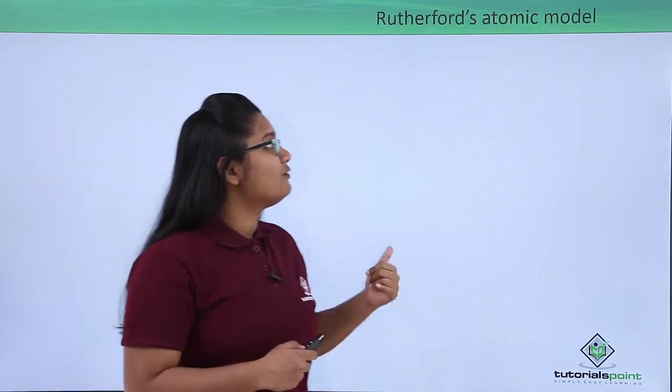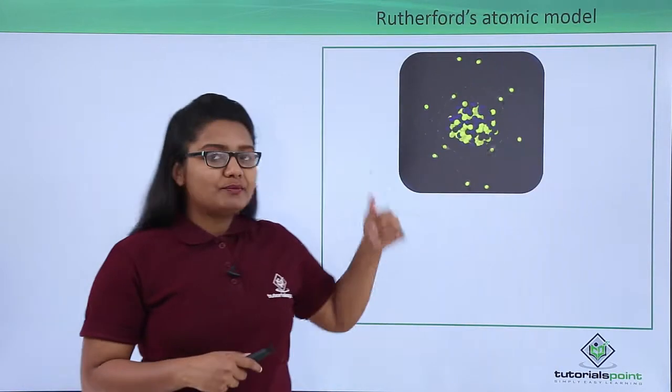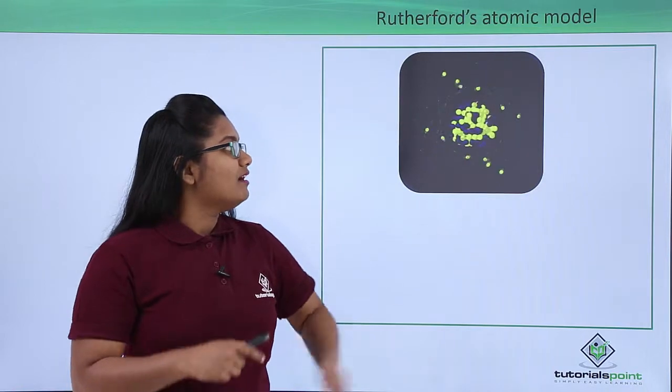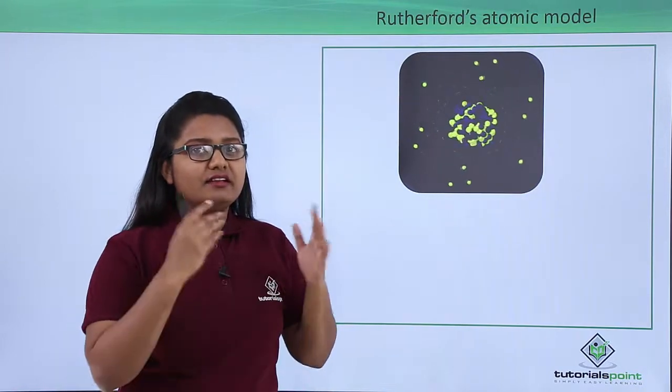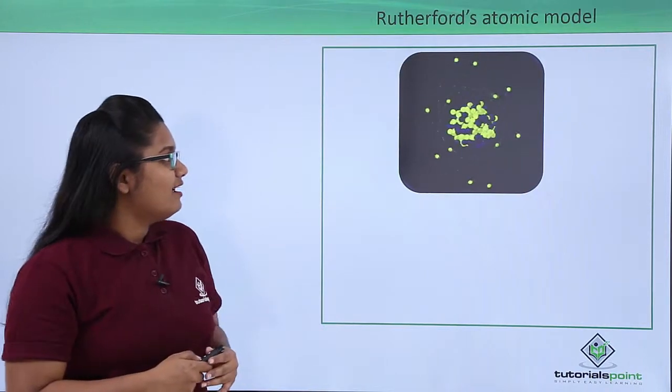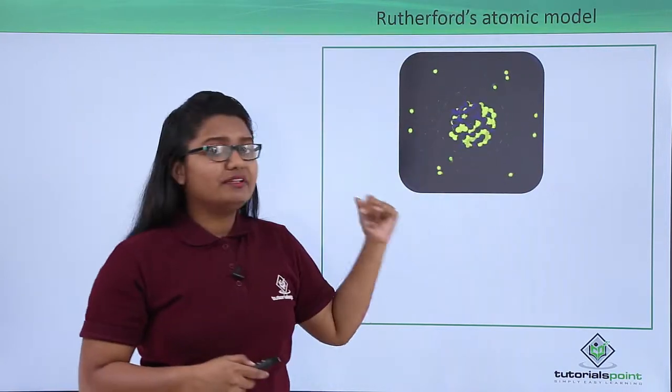Previously, we know from Rutherford's atomic model that there is a positively charged center inside an atom around which the electrons revolve in a circular orbit, and there was a problem with this Rutherford's model.